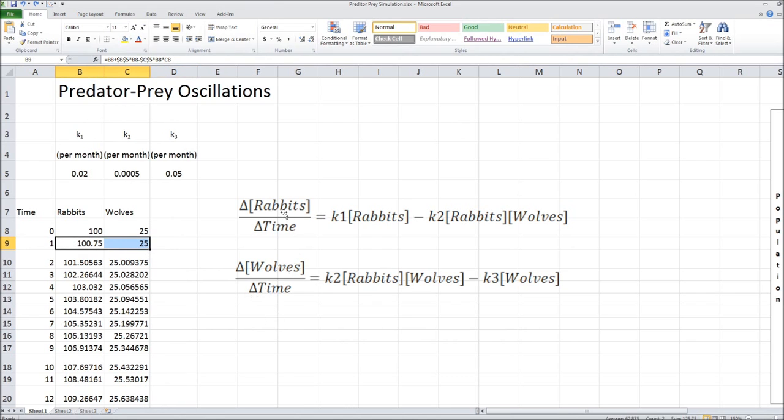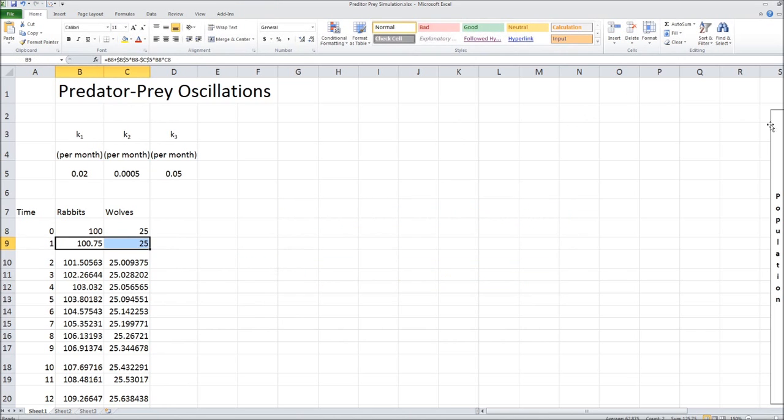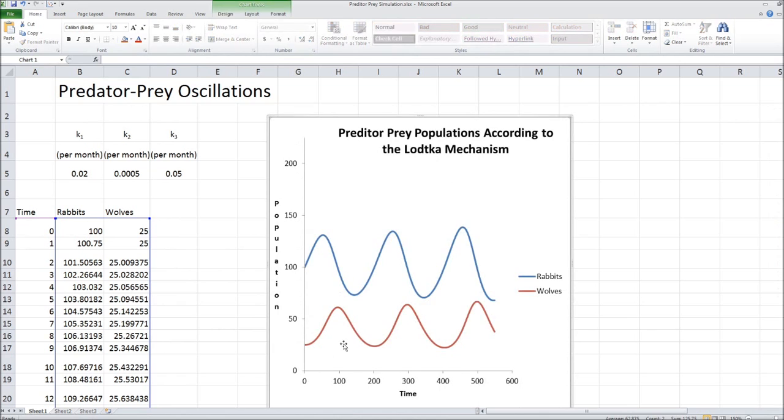And this is what we get on a graph. Let me get this out of the way and bring the graph over. And here we have our graph. And here's the rabbit population. It first increases, but as it increases, more wolves eat rabbits and generate more wolves. And that, of course, causes the rabbit population to decrease, which subsequently causes the wolf population to decrease.